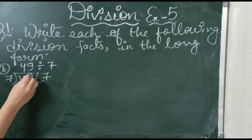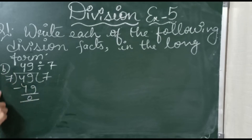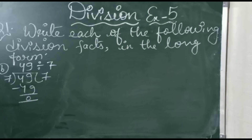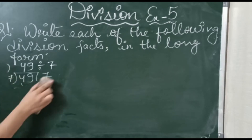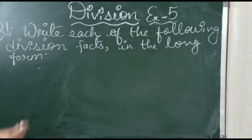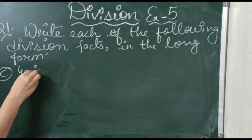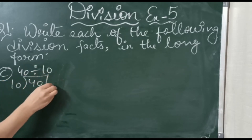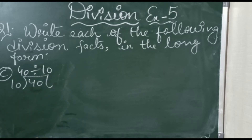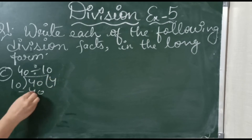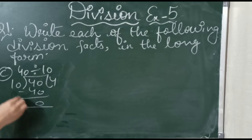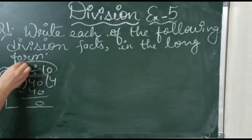49 minus 49 is 0. This is the long form of division. If you know the tables, you can directly identify how to do it — how many times we have to take the number. You can easily find it, but before that you should know the tables. Next: 40 divided by 10. We write 10 outside and 40 inside. 40 is in the table of 10 — 4 times. 40 minus 40 is 0. This is the long form of division and the division fact.